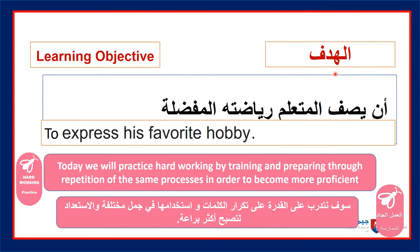هدفنا اليوم — Our learning objective today: أن يصف المتعلم رياضته المفضلة. So today you are describing your favorite hobby. And today you will practice the VAA, or hard working, by preparing through repetition of the same process in order to become more proficient. Repeat after correcting your mistakes and responding to the feedback given by your teacher.